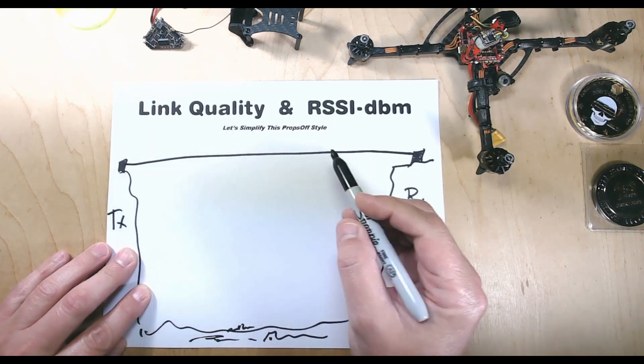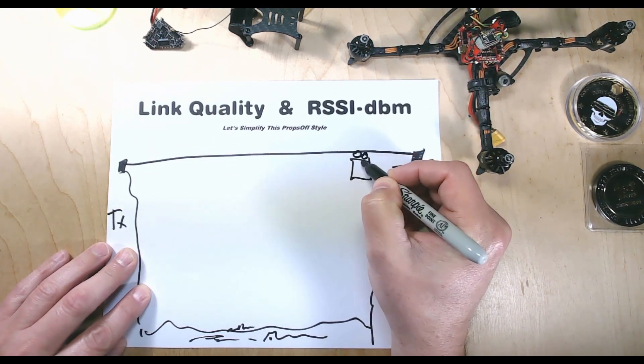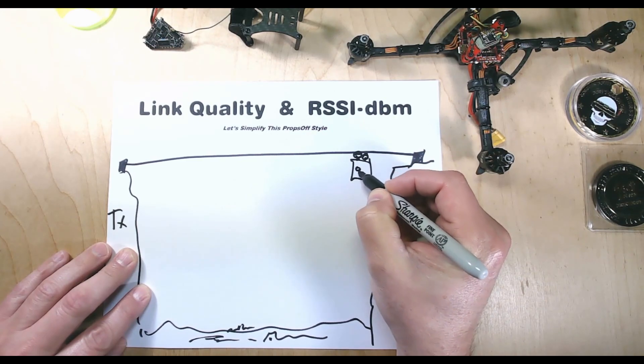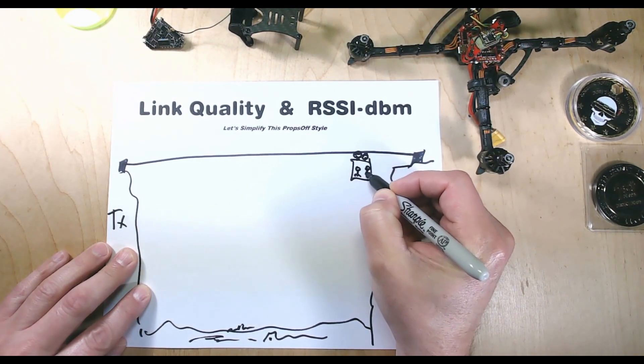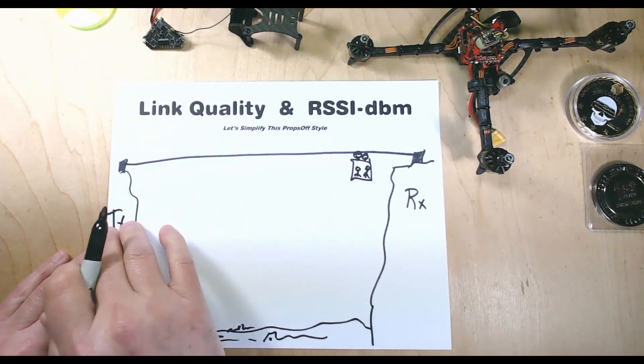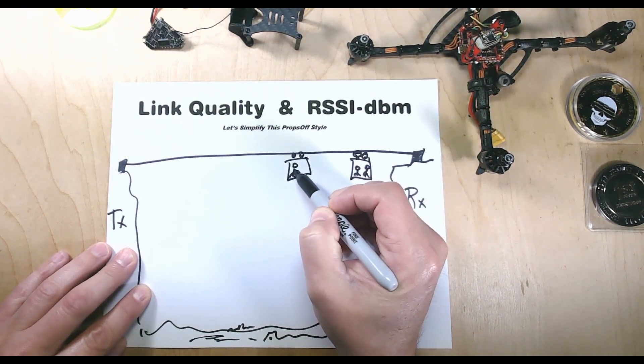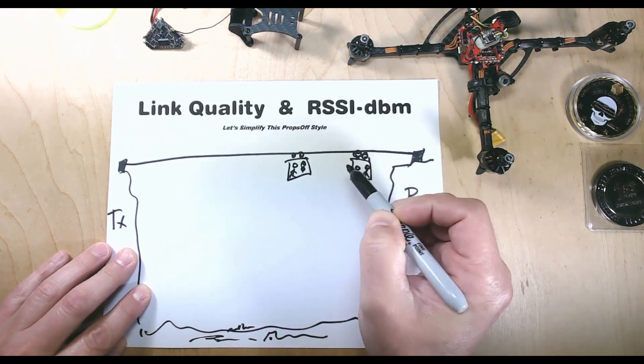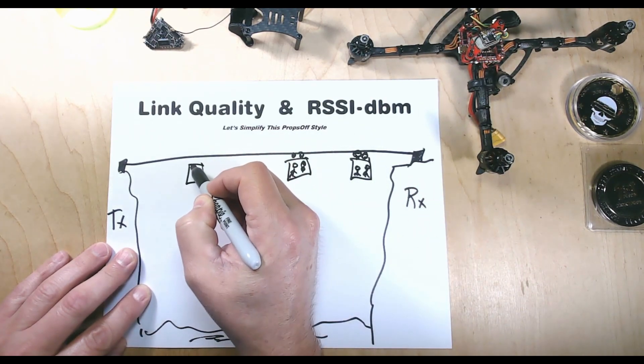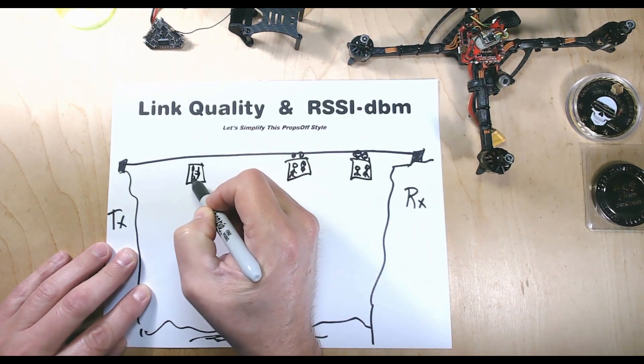Link Quality, let's say, is the carriages that carry our little army men from one to another. Let's say we have lots of packet rate—the more packet rate, the more carriages, the more army men.